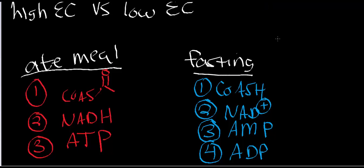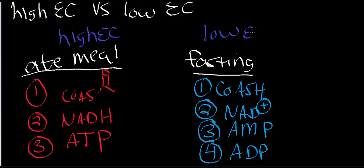Let's think about which scenario represents high energy charge and which represents low energy charge. The biggest giveaway is the ATP: if asked which molecule is higher in energy, AMP or ATP, the answer is ATP. So if I just ate a meal, I have all the energy in the world — I'm producing NADH, a reduced cofactor, and high energy phosphates in the form of ATP. After eating a meal, this is when you're in a high energy charge. When you're fasting, you don't have as many reduced cofactors or high energy phosphates — this is low energy charge.